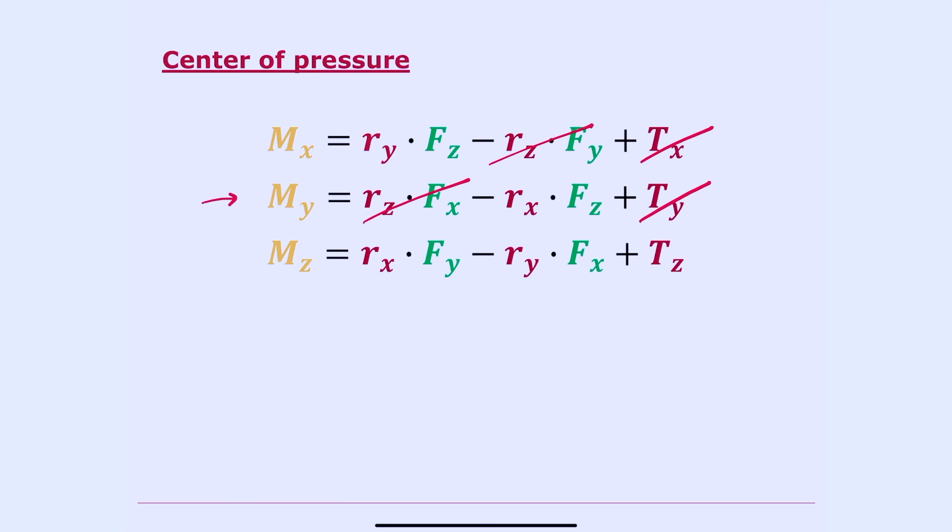Let's use equation two to solve for rx. rx equals negative my over fz. We'll use equation one to solve for ry. ry equals mx over fz. And finally, let's use equation three to solve for tz. tz equals mz minus rx fy plus ry fx.